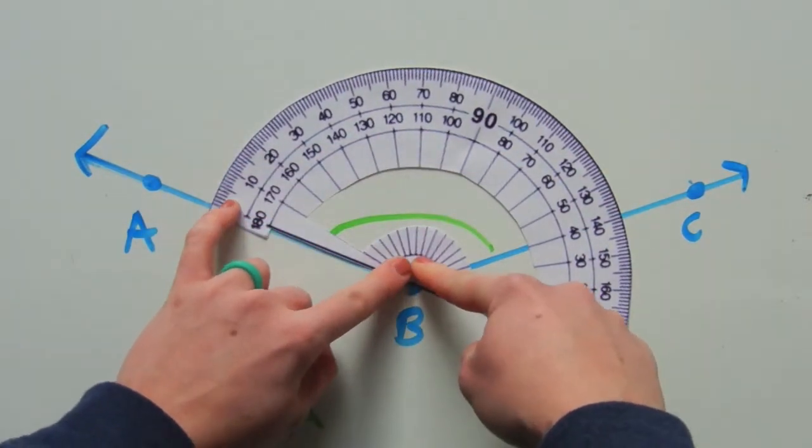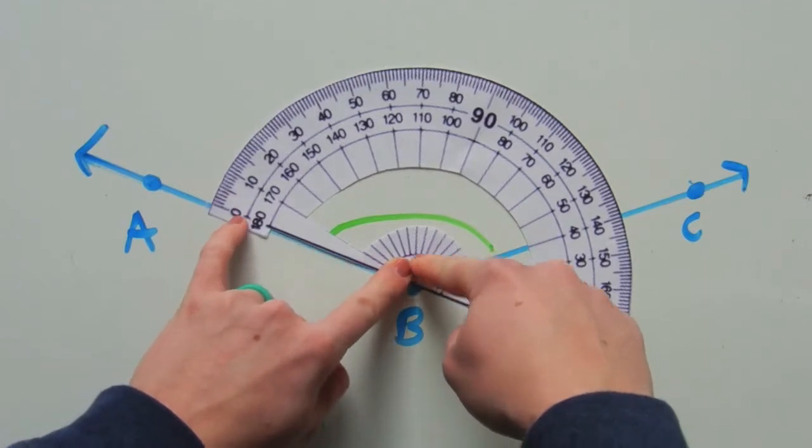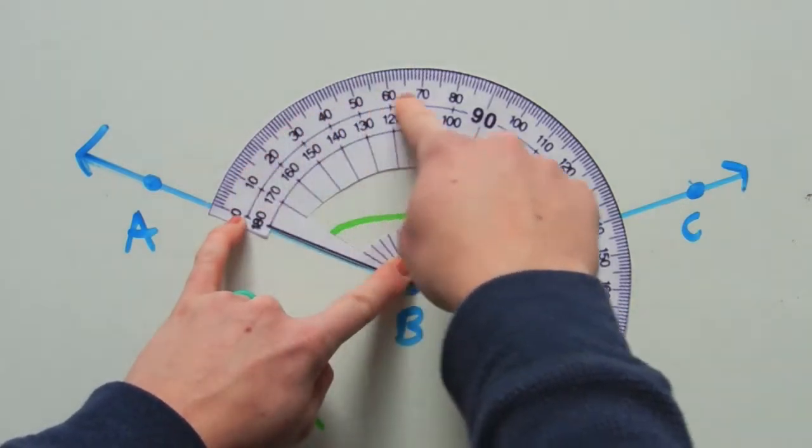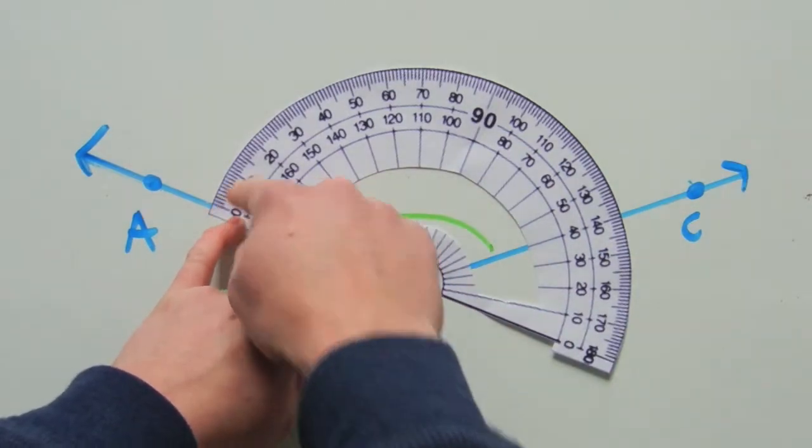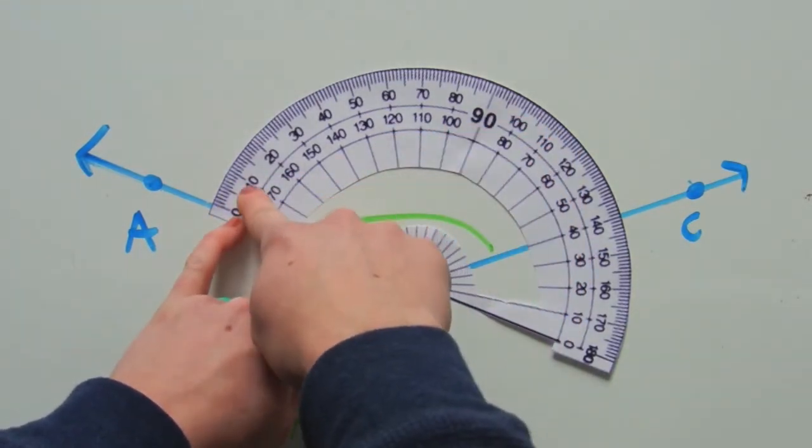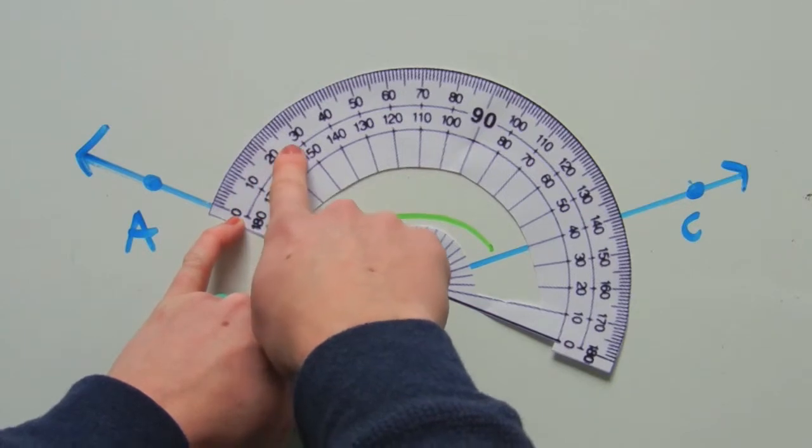So holding it steady, we're going to start at zero, and remember, we're counting up, not at 180, we're starting at zero. So 10, 20, 30.